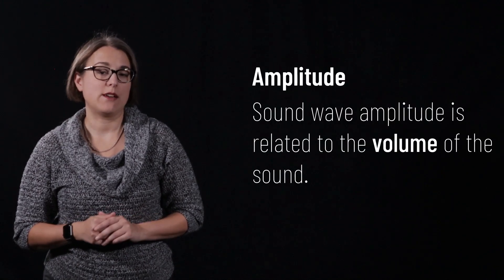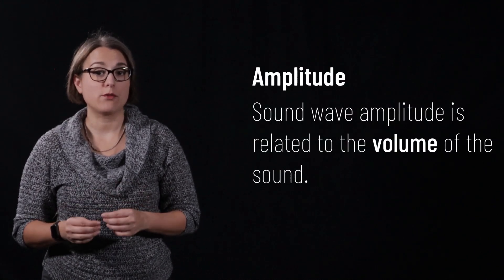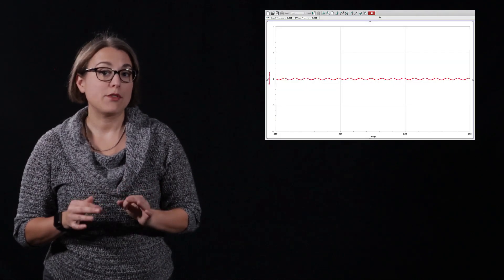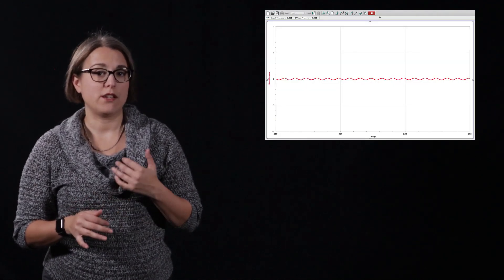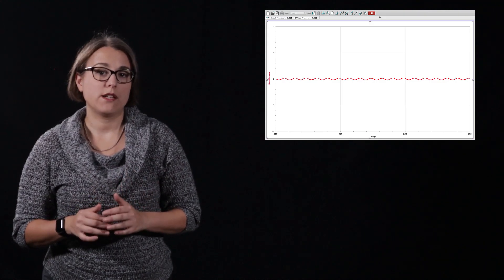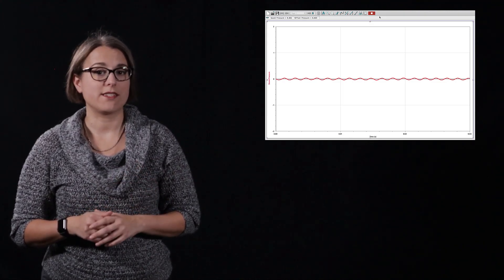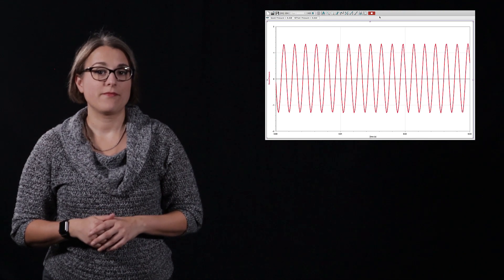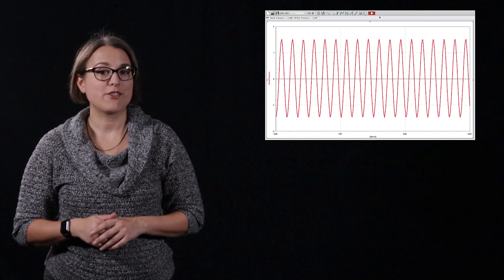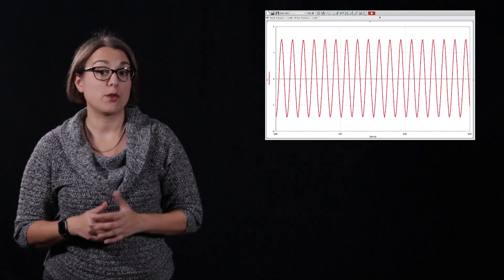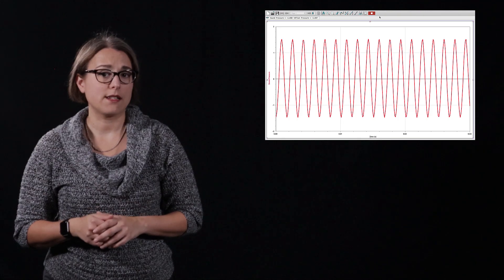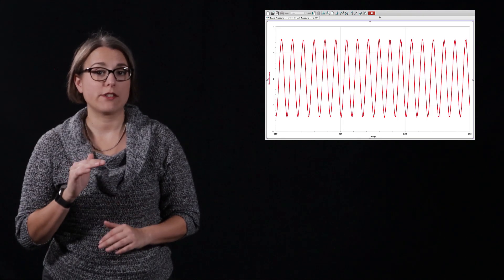The amplitude of a sound wave is proportional to the loudness or volume of that wave. In this demo, I keep the frequency constant and instead change the amplitude of the wave. As the amplitude increases, the volume increases. The microphone captures the sound waves to show the pressure versus time graphs. The frequency of oscillation remains constant, but the amplitude increases with volume.